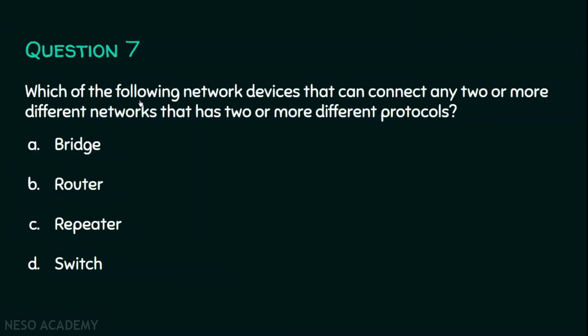Question number seven: which of the following network devices can connect two or more different networks that have two or more different protocols? Option A: bridge. Option B: router. Option C: repeater. Option D: switch. The answer is B, router. Bridge connects networks of the same protocol, but router can connect networks with different protocols. Repeater just regenerates signals, and switch is used to establish a single local area network.